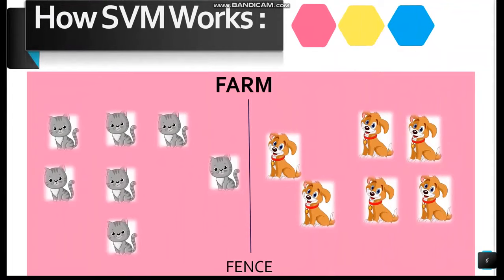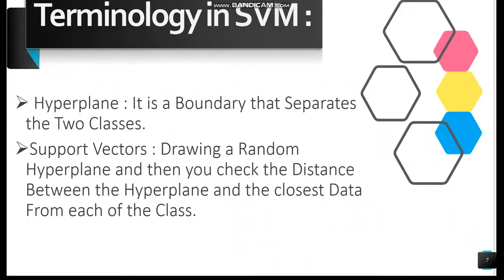To understand how SVM works, consider a small example. Imagine you own a farm and need to set up a fence to protect your cats from dogs. We can use Support Vector Machine to solve this. SVM draws a boundary, called a hyperplane, between the two classes — cats and dogs — to separate or classify them. The basic principle behind SVM is to draw a hyperplane that best separates the two classes.